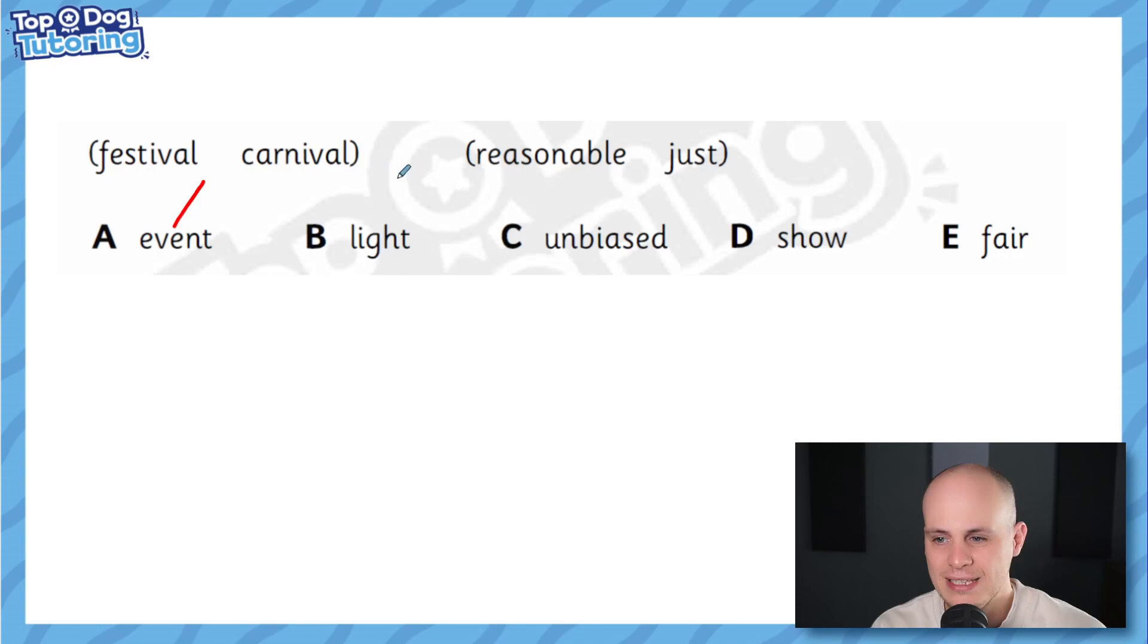So festival and carnival, they're not quite synonyms but they're very similar things, they're both events so I think this goes quite well with them. You could say they're both shows, you know a carnival is a type of show, a festival normally has a show going on. You could also say a fair like a summer fair, right? A summer fair is like a carnival, like a festival where everyone gets together and maybe you buy and sell things and there's a band performing a show at the other end, they're all really similar whereas light and unbiased I don't really think go with this.